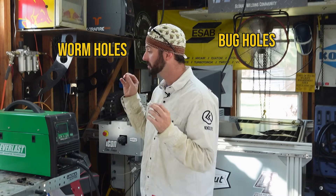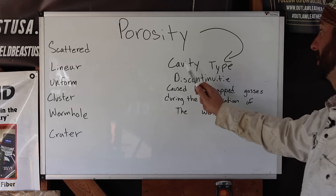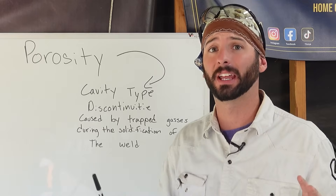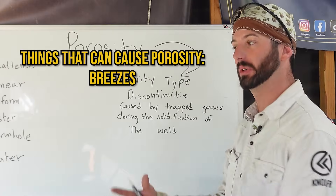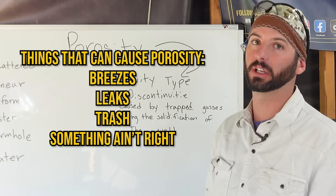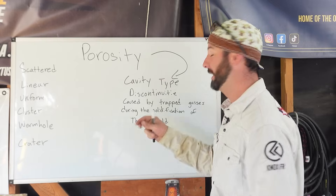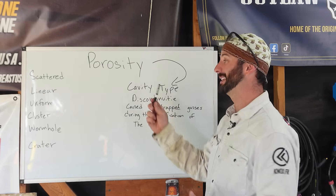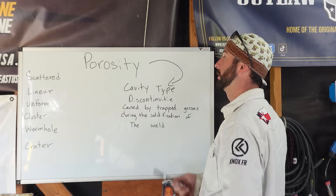Porosity — bug holes, wormholes, pinholes. There are actually a lot of names for this stuff, and that's what today is all about. Porosity is a cavity-type discontinuity caused by trapped gases during the solidification of the weld. It happens in any welding process — typically atmospheric gases coming in because of lack of shielding, breezes, leaks, trash, or something just not right. We're trapping gas inside that weld, which needs to be all solid metal, forming those pores.